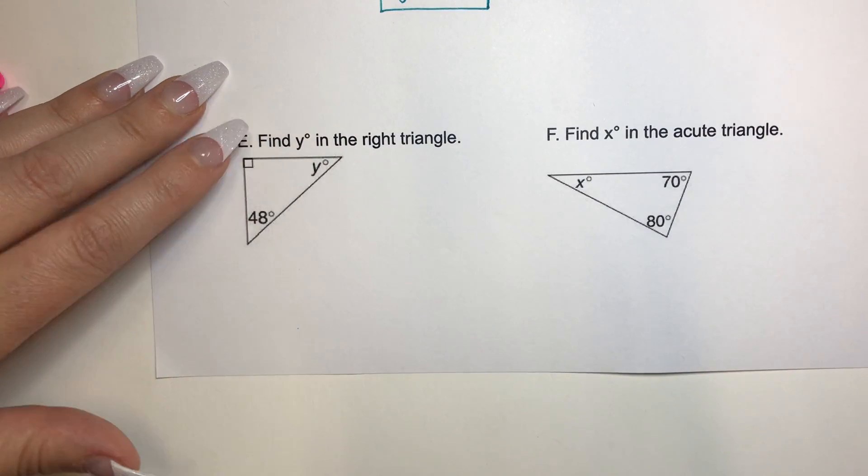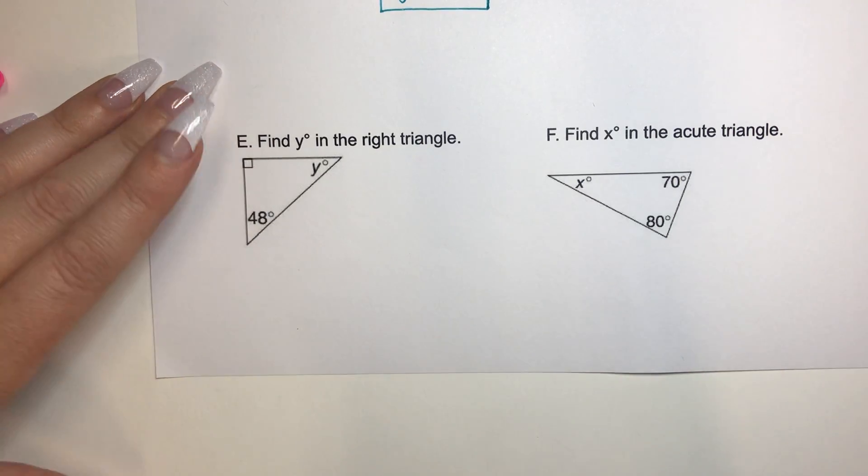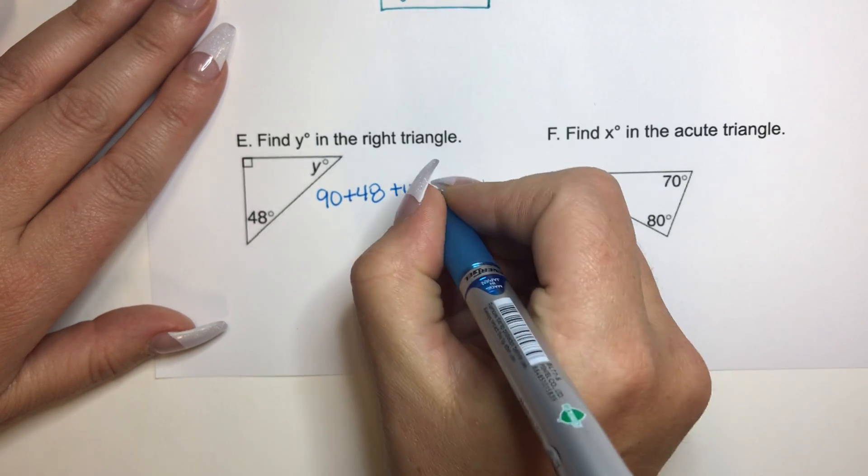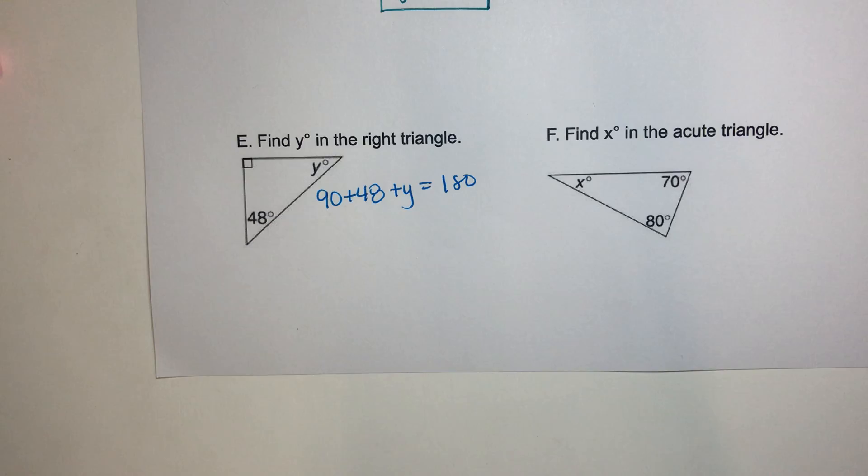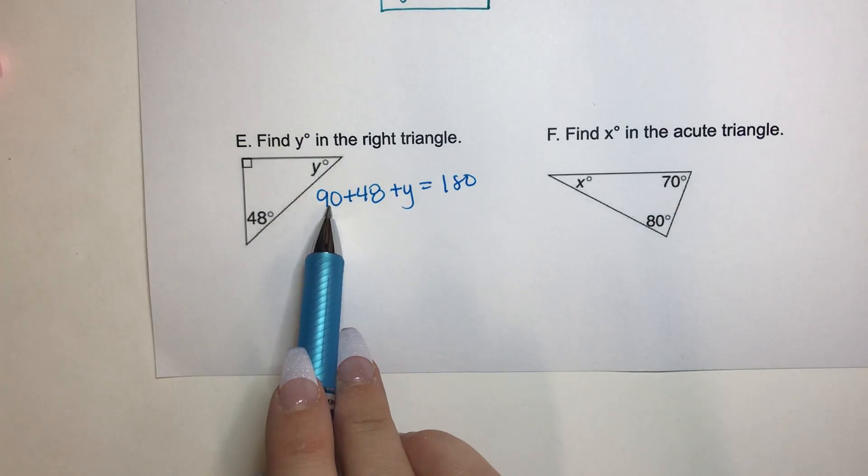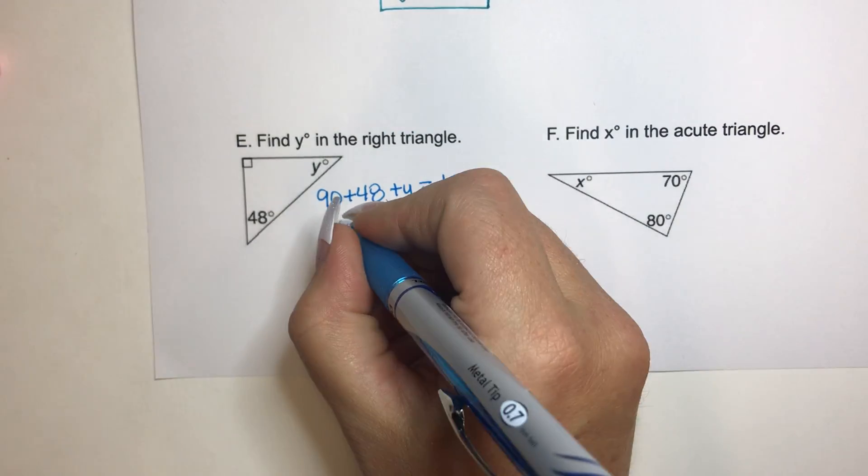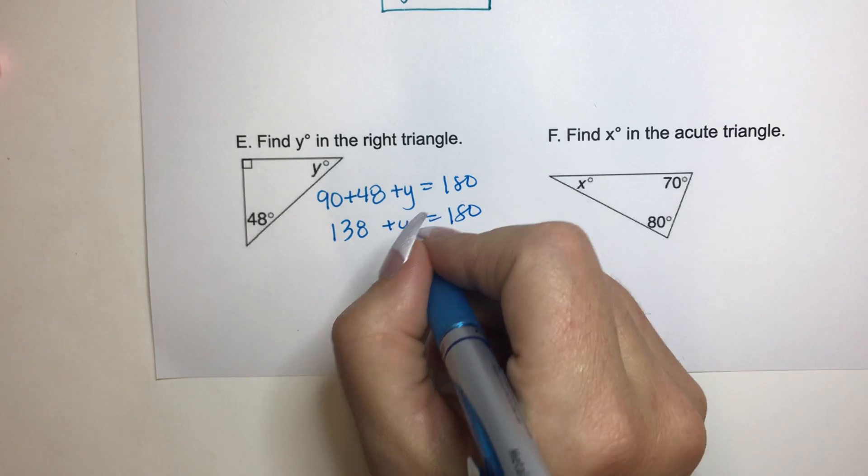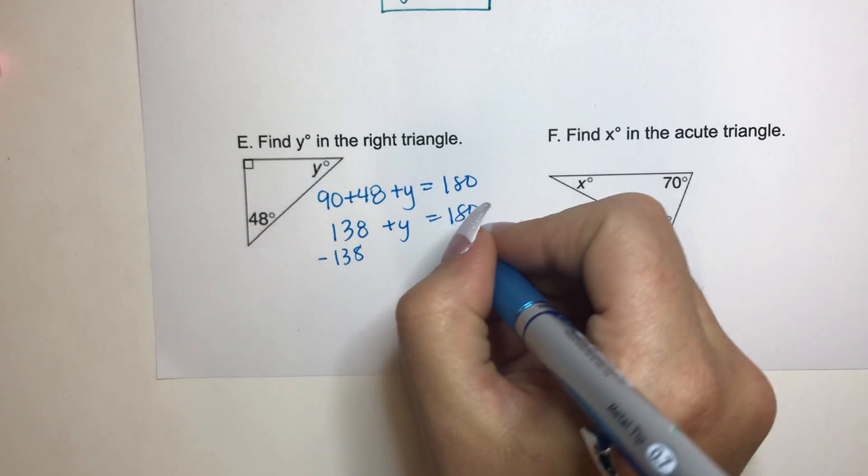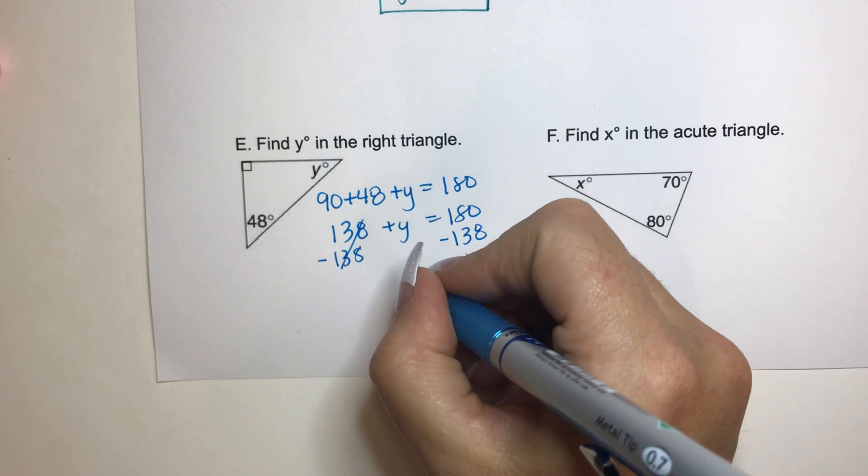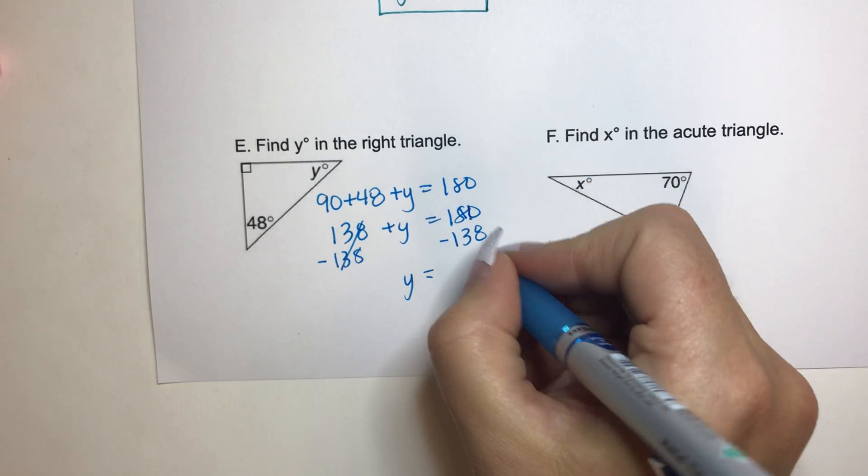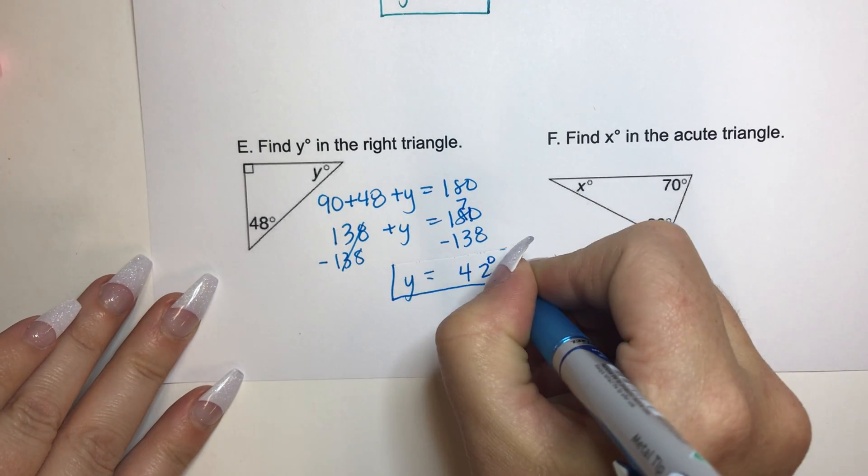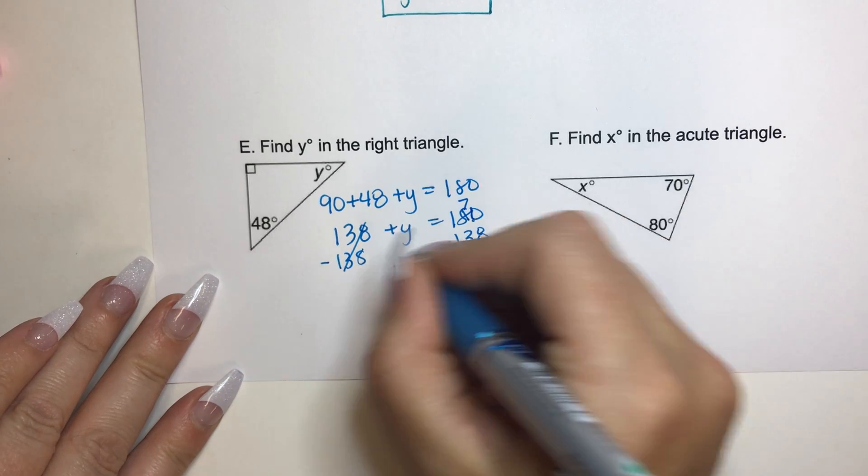Let's look here. Find Y on the right triangle. It's a right triangle, which means this is a 90 degree. So we are going to go 90 plus 48 plus Y equals 180. That triangle sum theorem. 90 plus 48 is 138. Yeah it is. Plus Y equals 180. And then we're going to get Y by itself, so we're going to do the subtraction property of equality. That cancels. And we are left with 42 degrees. If you got that one right, great job.